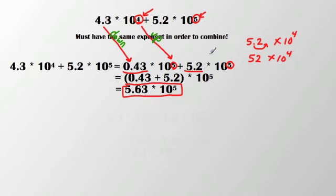When I add that with 4.3 times 10 to the 4th, I would end up with 56.3 times 10 to the 4th. And we know our values in scientific notation,